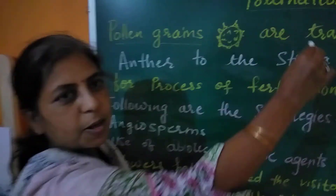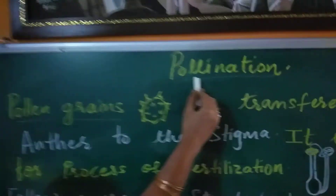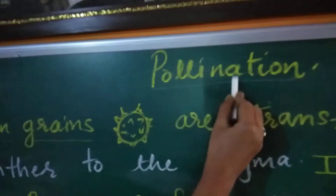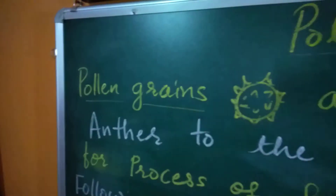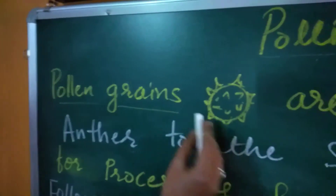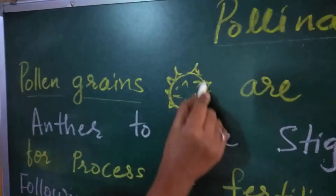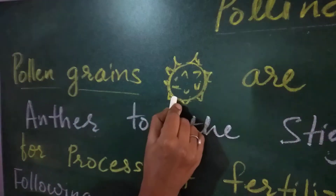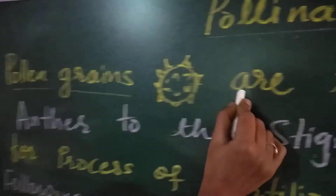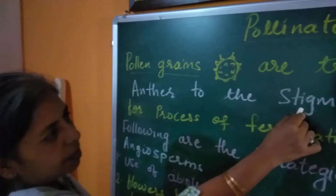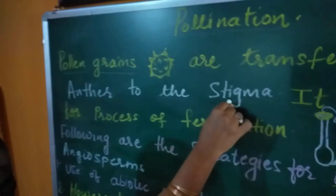Today we are going to study pollination. Pollination is the process or the act in which pollen grains are transferred from anther to the stigma.